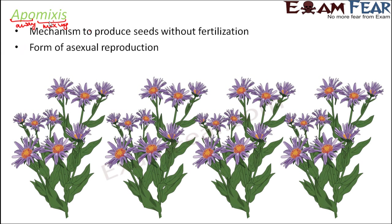Apomixis is a form of asexual reproduction where we don't need to combine the traits of a male and female gamete to produce a zygote. We simply want to replicate seeds — produce seeds of the same type. Exact copies of the parents are produced, so it is asexual reproduction in nature, but it mimics the product of sexual reproduction by producing a seed.